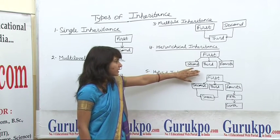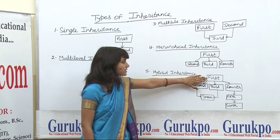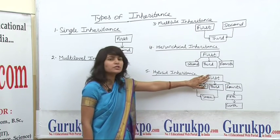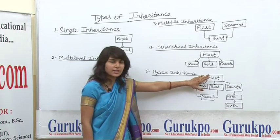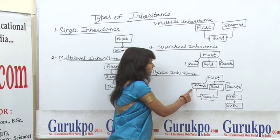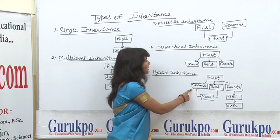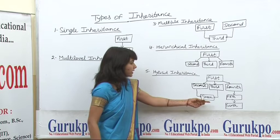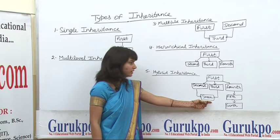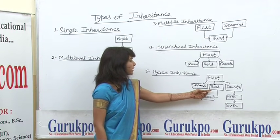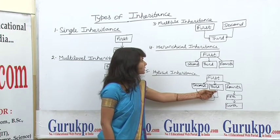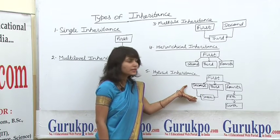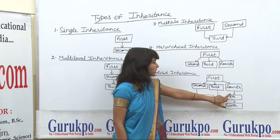Here it is shown that it is hierarchical inheritance. Now again, a seventh class is created which uses the features of the second and third class — here it is multiple inheritance.